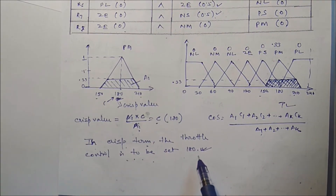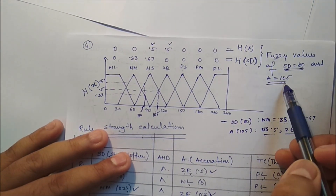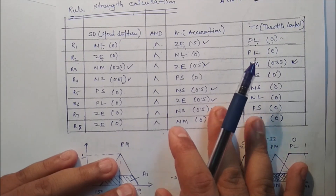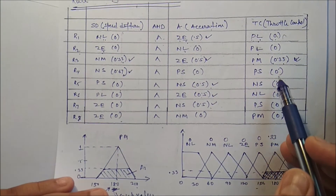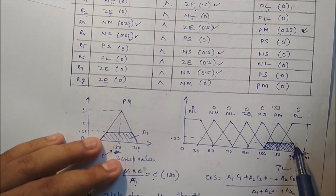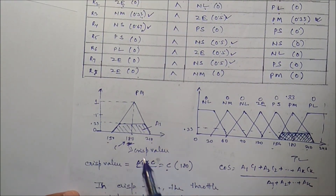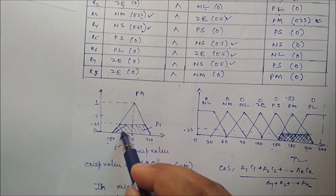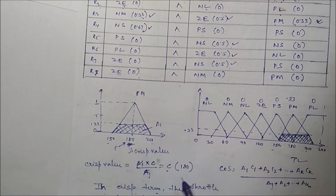To summarize the worked example: two inputs were 80 and 105; after fuzzification and rule strength calculation, only PM was the active output with value 0.33. Since only a single fuzzy area is involved, the center of sum method simplifies to the center point c = 180, which is the final crisp throttle control output.